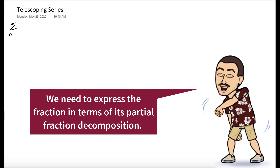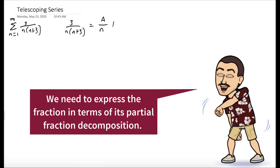We want to see if the sum from n equals 1 to infinity of 3 over n times n plus 3 is convergent or divergent. The way we're going to do that is we're going to express our series as a telescoping series.